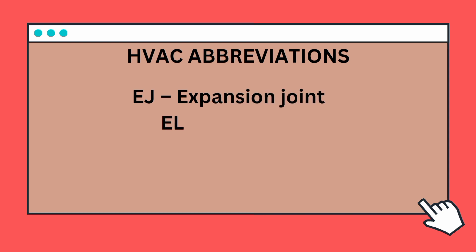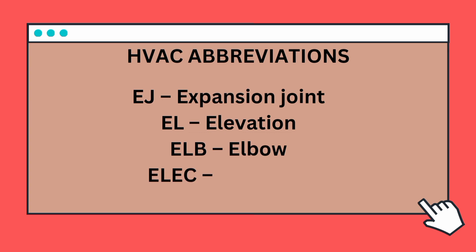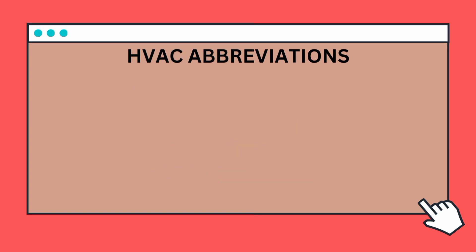EJ — Expansion Joint. EL — Elevation. ELB — Elbow. ELEC — Electrical.